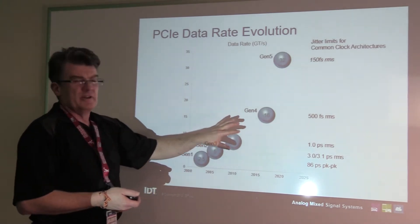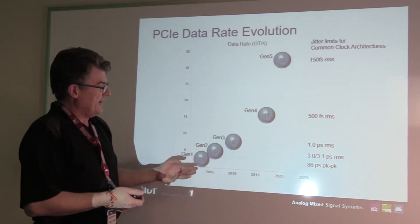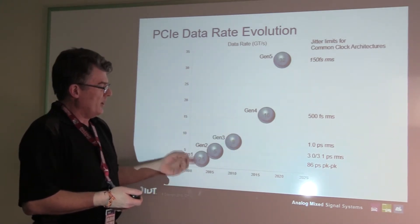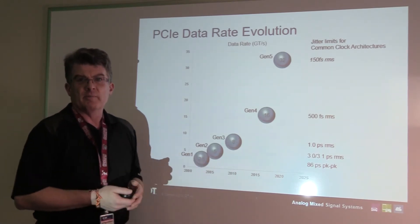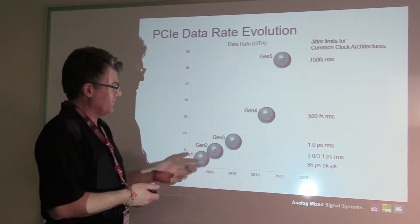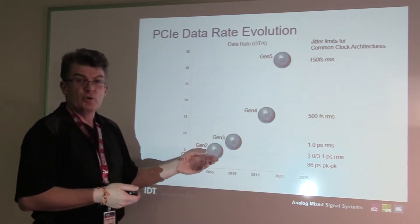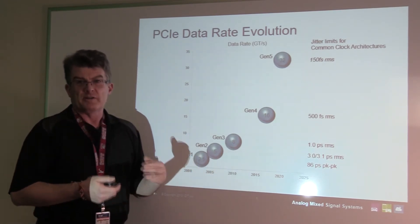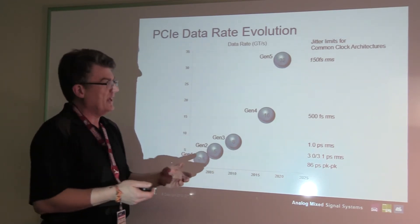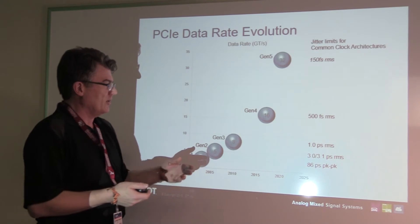What we have is the history of the data rates for PCI Express. We have Gen 1, which was a 2.5 gigabit per second transfer rate. There was Gen 2 at 5 gig, and PCI Express likes to double the data rate every generation.